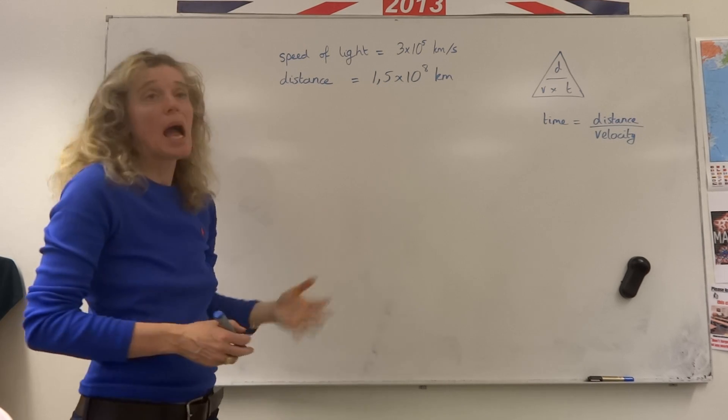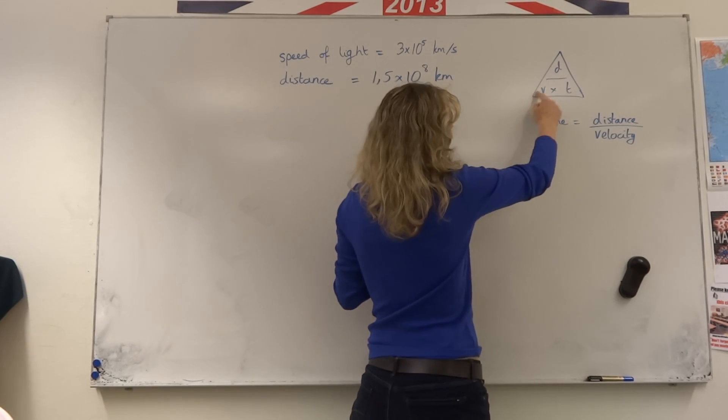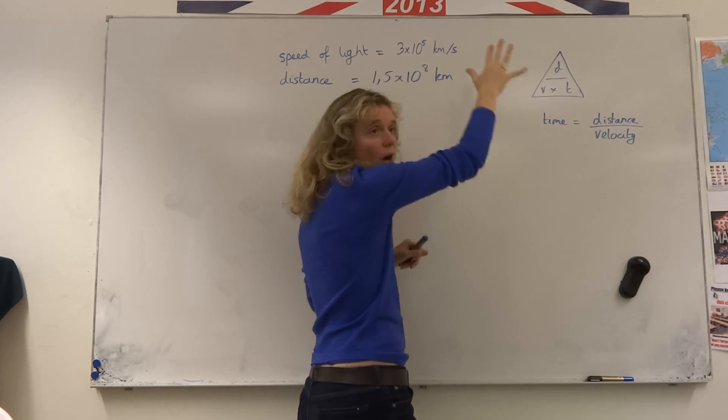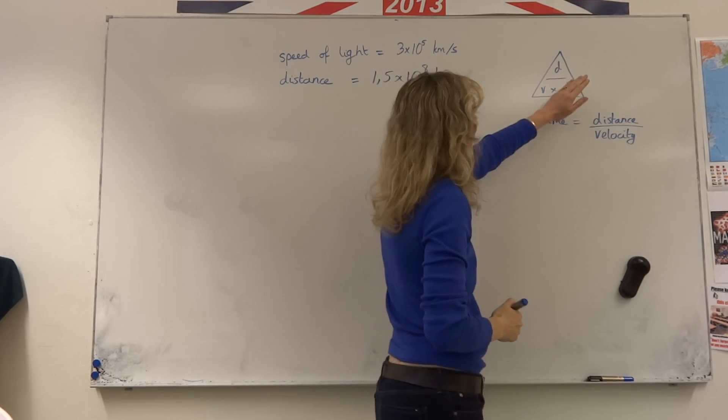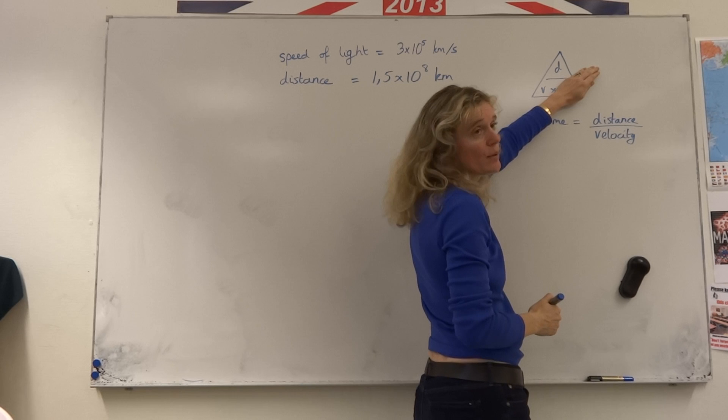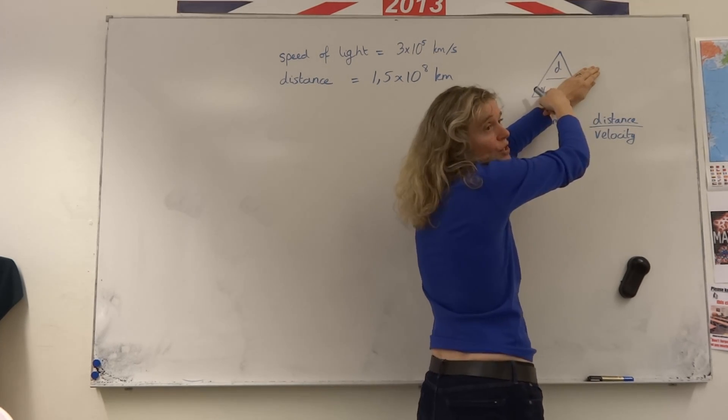The question is, how long is the time? Well, we know that velocity is distance over time. So if we write it up in this triangle and we want to find out what time is, cover our hand with time and it gives us distance over velocity.